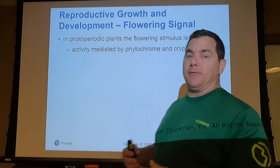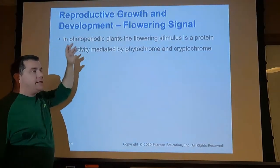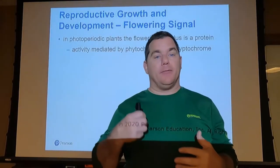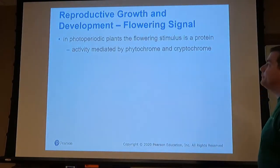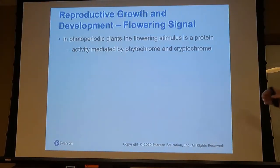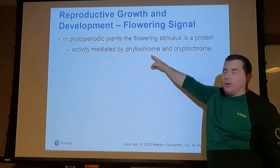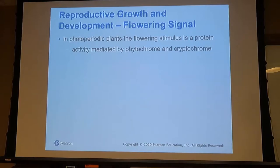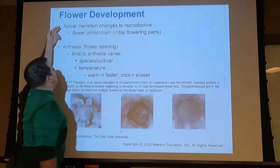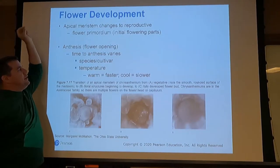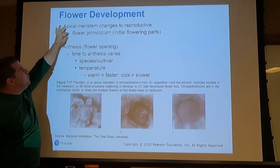Picking back up from section one, we left off talking about the photoperiod and how we can influence day length to trick or manipulate the plant into doing what we want. The reason that works is because we produce proteins — phytochrome or cryptochrome — that influence the plant. Those proteins initiate or signal to the apical meristem that it is time to change from juvenile to mature cells.